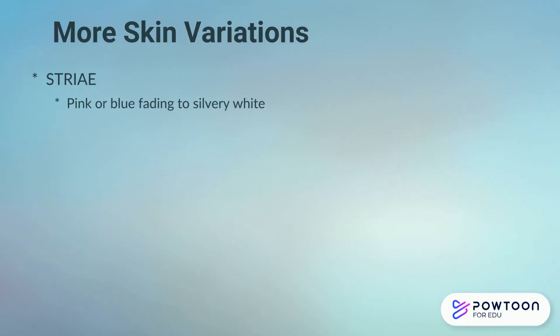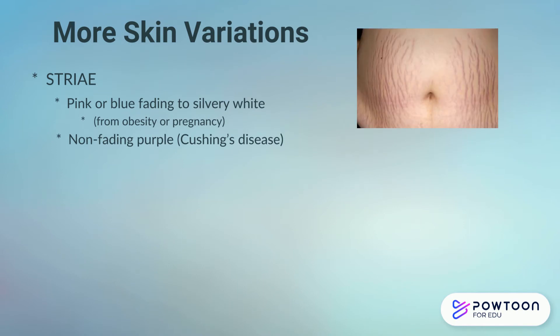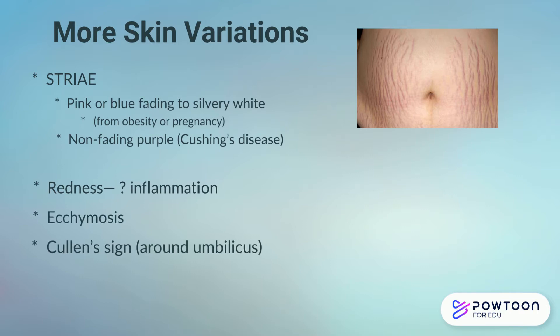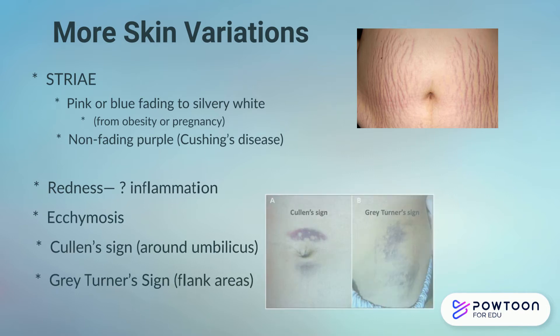Notice any other skin variations, including striae, also known as stretch marks. We also want to look for any redness, any ecchymosis, or bruising. There are two signs called the Cullen sign and the Grey-Turner sign that may indicate a retroperitoneal bleed. Pay close attention to that.